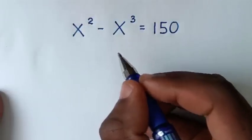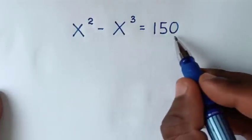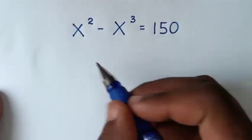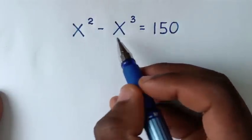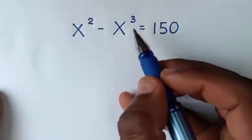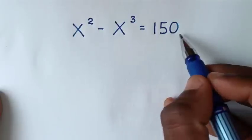Hello, you are welcome to solve this math problem, which is x squared minus x power 3 is equal to 150.